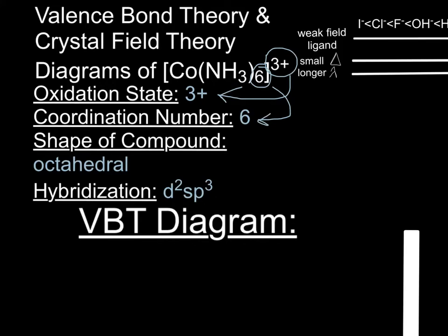From this, we can determine the shape of the compound. Because of the coordination number being 6, the shape of the compound is octahedral. From this, we can also determine the type of hybridization. Because of the shape being octahedral, the type of hybridization is d2sp3.